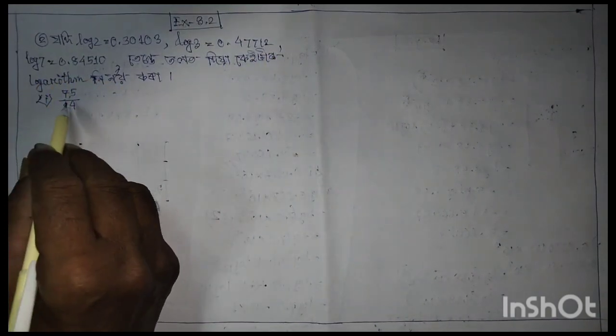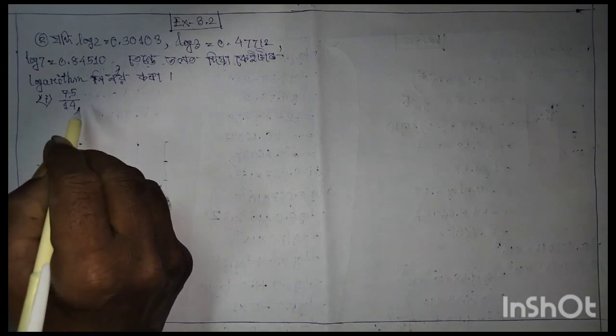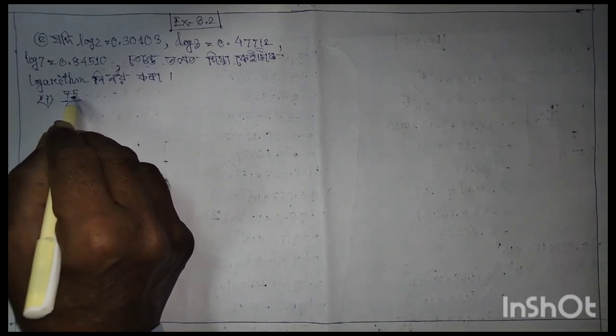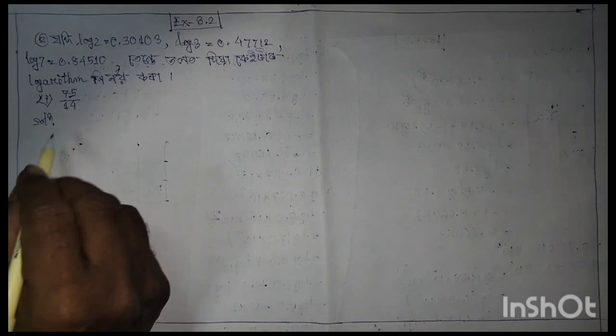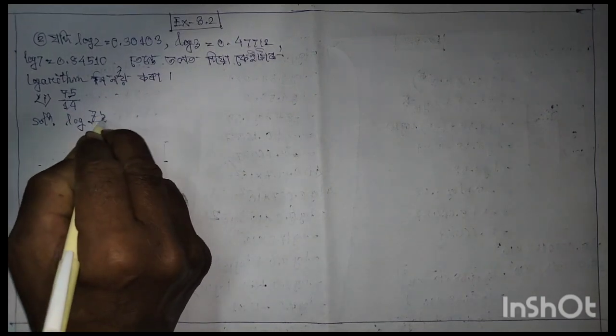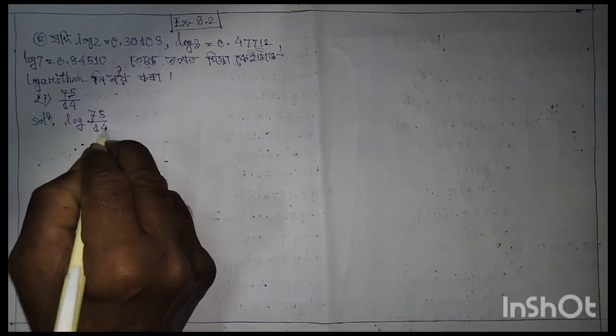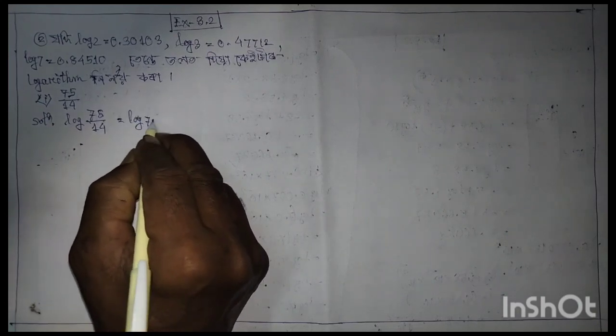Question 1: Find log of 7.5, which is log of 75 by 14. Solution: log(75/14) equals log 75 minus log 14.